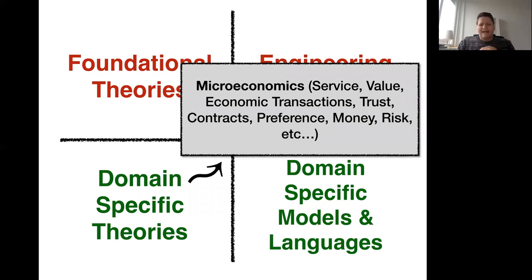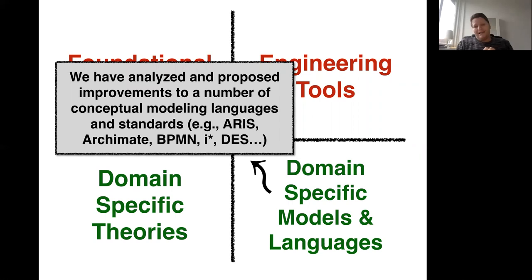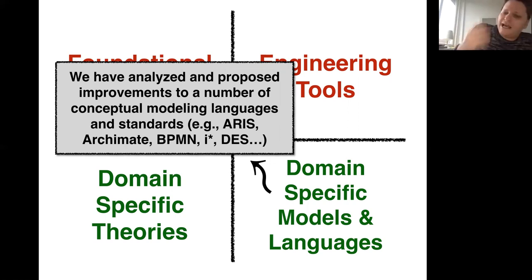Another area in which we have been working is microeconomics, dealing with phenomena like service, value, economic transactions, trust, contracts, economic preference, money, and risk. Once we have these domain ontologies, we can also design, evaluate, and re-engineer domain-specific languages. We have done this for many enterprise modeling languages like Archimate, and in several occasions proposed changes — some of which were accepted as changes to be made in the standard.